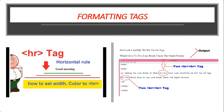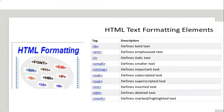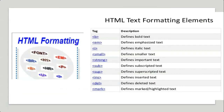For example: <hr size="5" noshade>. Text formatting tags are used for formatting the text appearing on the web page. Some of the formatting tags are B, U, I, BIG, and SMALL. The B tag displays the text thicker and darker than normal. The U tag underlines the text in the document. The I tag italicizes the text.